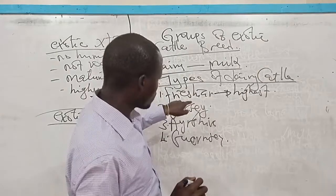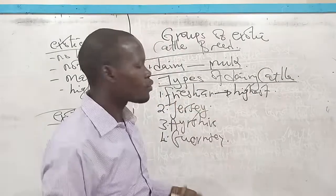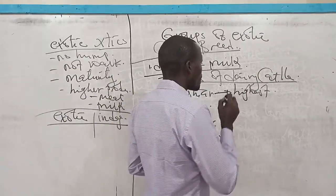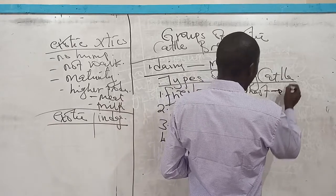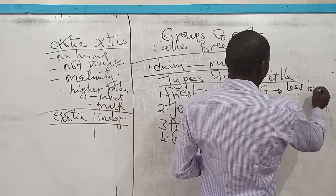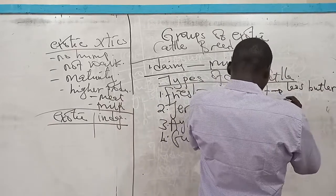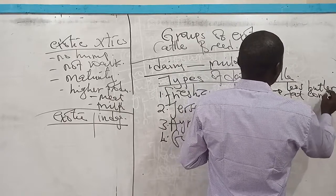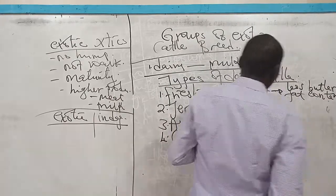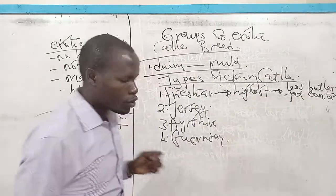That is the first, the Friesian. It is the highest in milk production, but you know the unique factor here is this: it has the large quantity of milk but its milk has low butter fat content. This milk has low butter fat content.